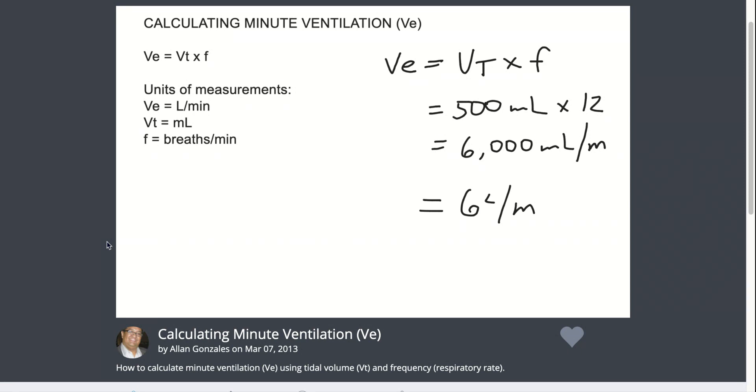What you could also do is change the tidal volume to liters from the start. So, in the same example, you could say 0.5 liters times 12 will give you 6 liters per minute.